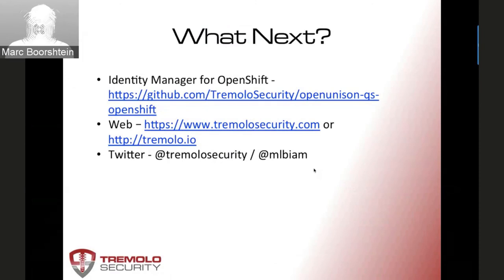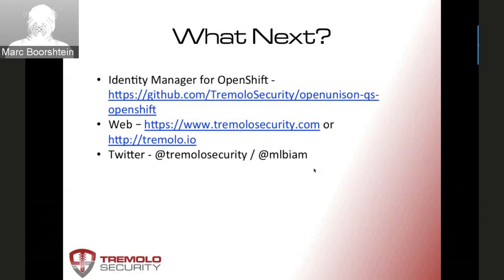So what's next? Here's the link to the pre-release of the OpenShift Identity Manager. It's still in beta — it's got a couple of kinks we're still working out — but we're hoping to do a final release in the next few weeks. Anybody who's interested, please open an issue and provide feedback. It's open source and we love to hear from folks. You can find us on the web, and there's about a 10-minute demo video showing a very similar provisioning process with the commercial product, also adding in U2F and privileged access. We're on Twitter at Tremolo Security, and my personal account is MLBIM.